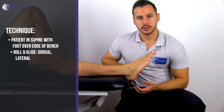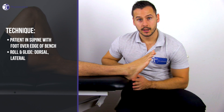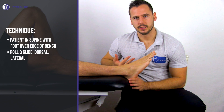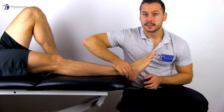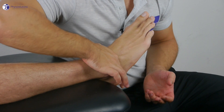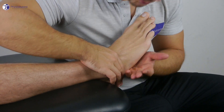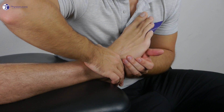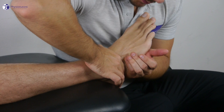To conduct this technique, the patient is in supine lying position and the foot is placed over the edge of the bench. Position yourself medially to the foot, either standing or sitting on a stool. Then fixate the foot with one hand by grabbing onto the talus, place the hypothenar of the other hand on the cuboid from plantar, and then roll and glide into dorsal and lateral direction with a slight distal component.